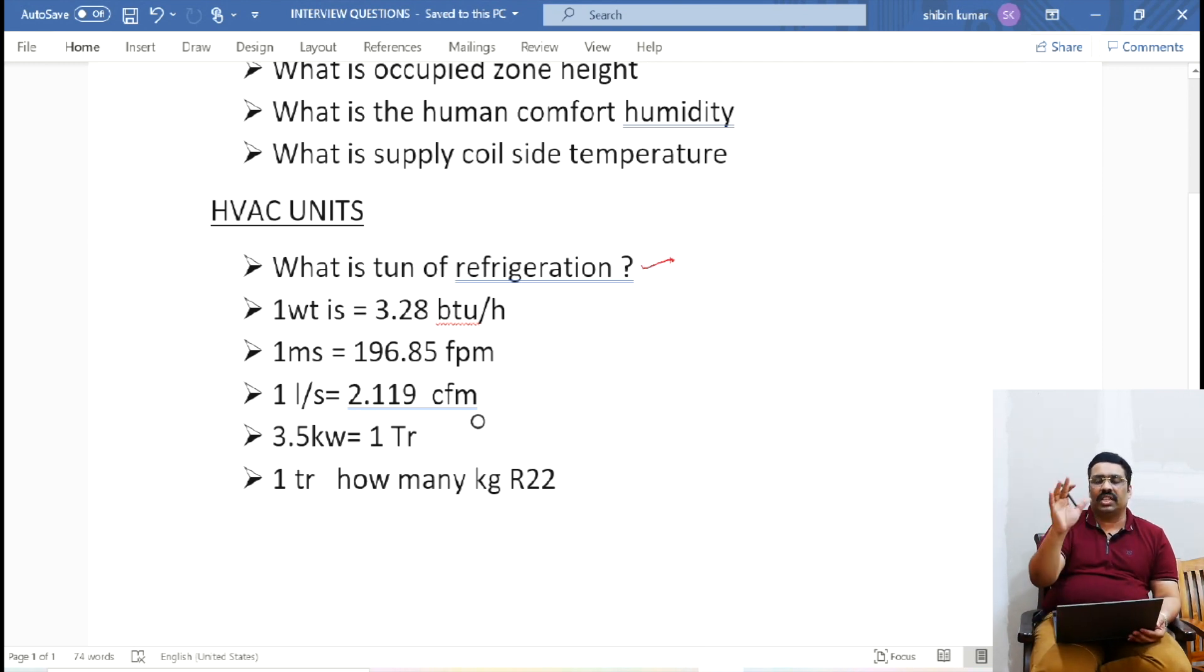1 ton of refrigeration - how much? 1 ton of ice cube melting in 24 hours. So 1 ton of ice cube is melting in 24 hours is called 1 ton. But that much energy, that energy, we call 1 ton of refrigeration.